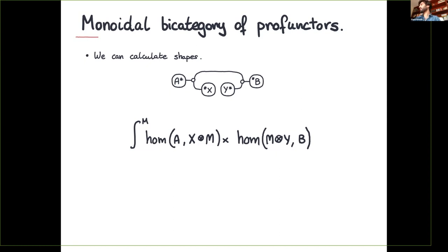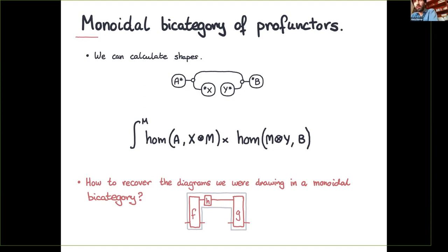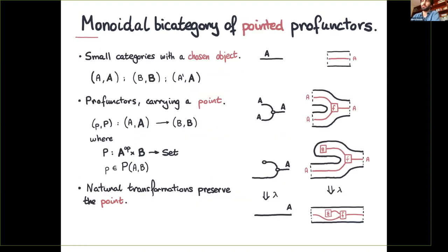There is a bit more you may want to ask: how do you justify the diagrams we were drawing at the beginning? At the beginning we were not only seeing the shapes but also seeing specific elements inside those shapes. The idea is to go to a slightly different monoidal bicategory — the monoidal bicategory of pointed profunctors.